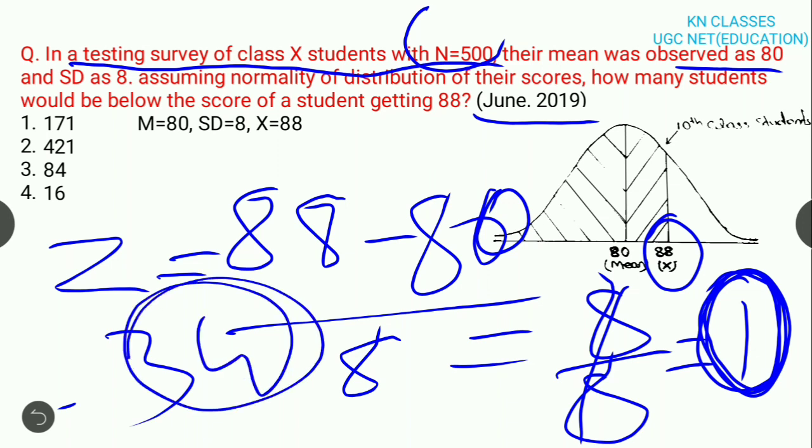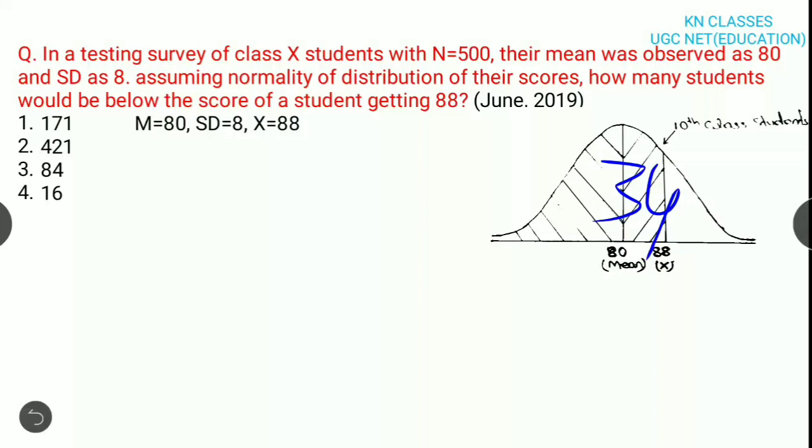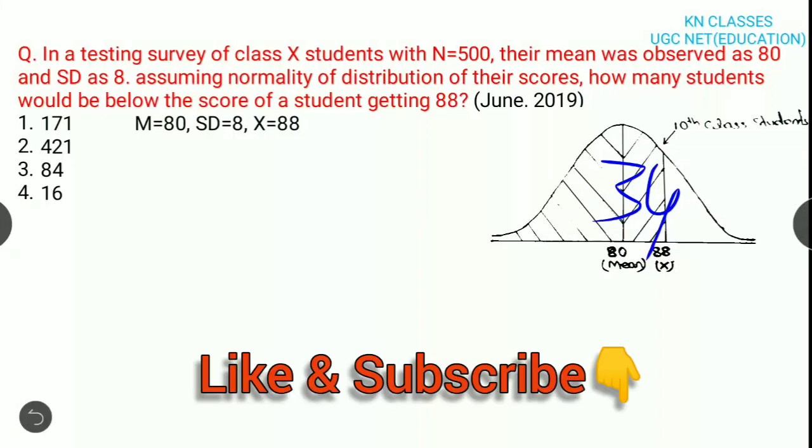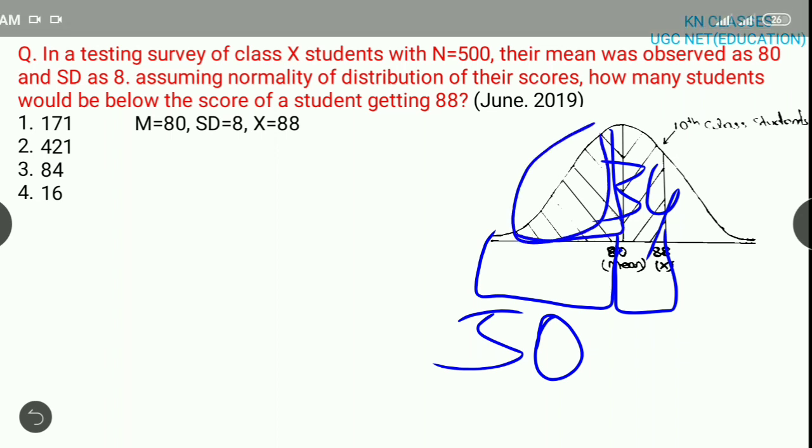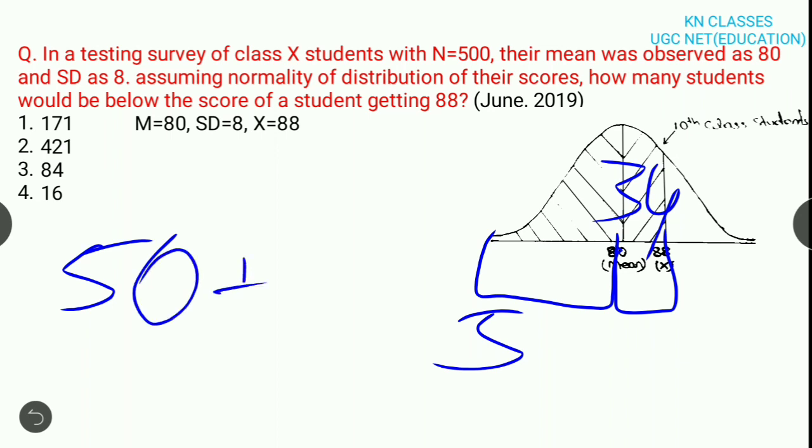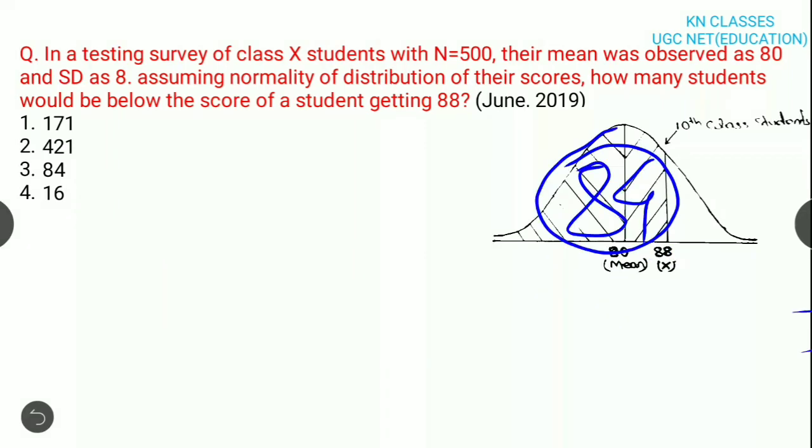We have to find out that 34 cases fall between the mean to the score 88. Now see, 34 students fall from the mean to the score 88. And here, below the mean is 50 students. Half of the curve is 50%. This is 50 and this is 34. Now, 50 plus 34 is 84.